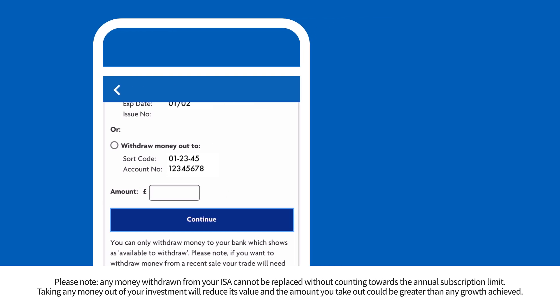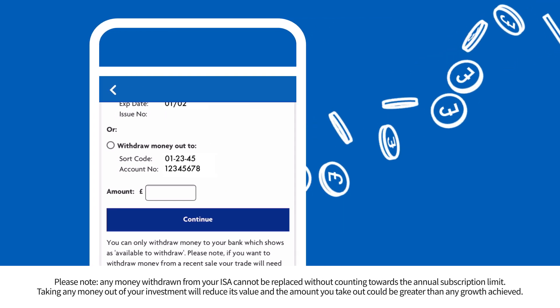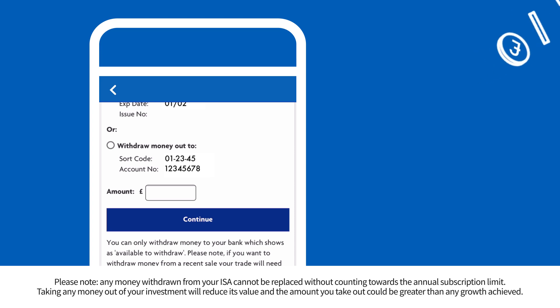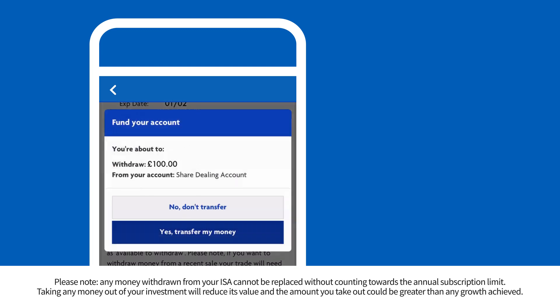If you want to take money out of your account, you can do that too. Just select Withdraw Money Out To. You should see the account details of where the money will go to. Enter the total amount and click or tap Continue. Check the amount and then select Yes Transfer My Money to go ahead.